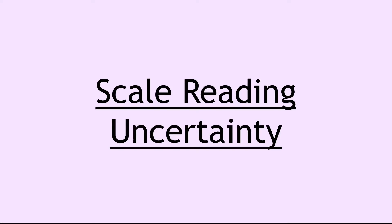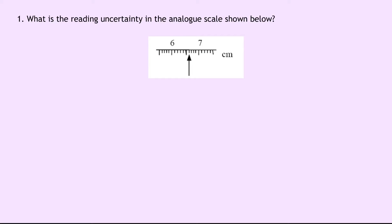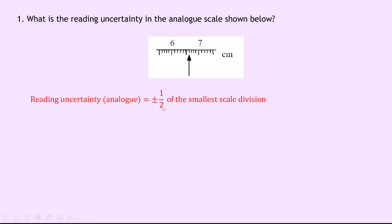The first type of uncertainty we're going to look at is scale reading uncertainty. We'll be looking at both analog scales and digital scales. Question one says: what is the reading uncertainty in the analog scale shown below? We need to remember the rule for analog scales, which is that reading uncertainty in an analog scale is equal to plus or minus half of the smallest scale division.